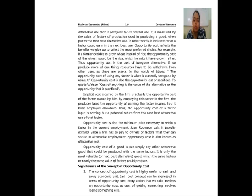Opportunity cost reflects the benefits we give up to select the most preferred choice. For example, if a farmer decides to grow wheat instead of rice, the opportunity cost of wheat would be the rice he might have grown instead. The opportunity cost is the cost of the foregone alternative — if we produce more of one thing, resources have to be withdrawn from other uses as these are scarce. In other words, the opportunity cost of using any factor is what is currently foregone by using it. Opportunity cost is also the opportunity lost or sacrificed to forgo other wants.